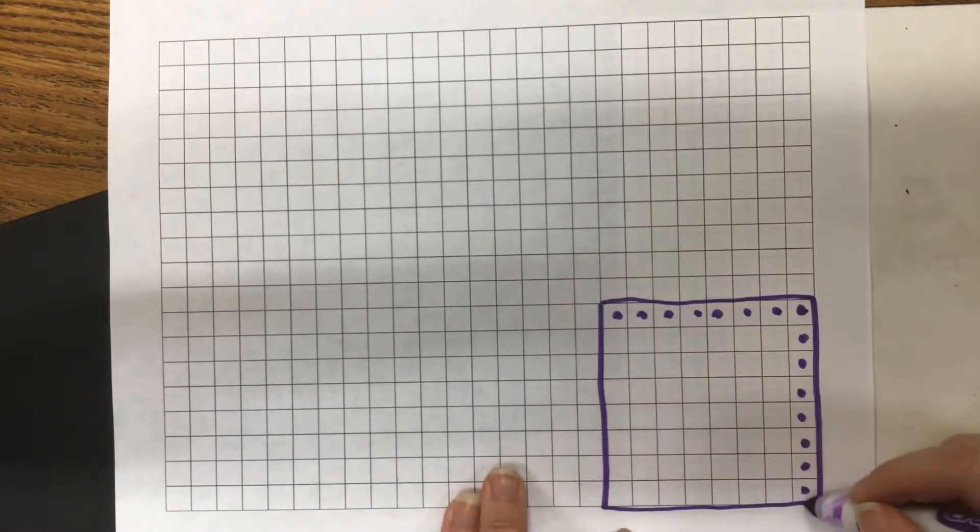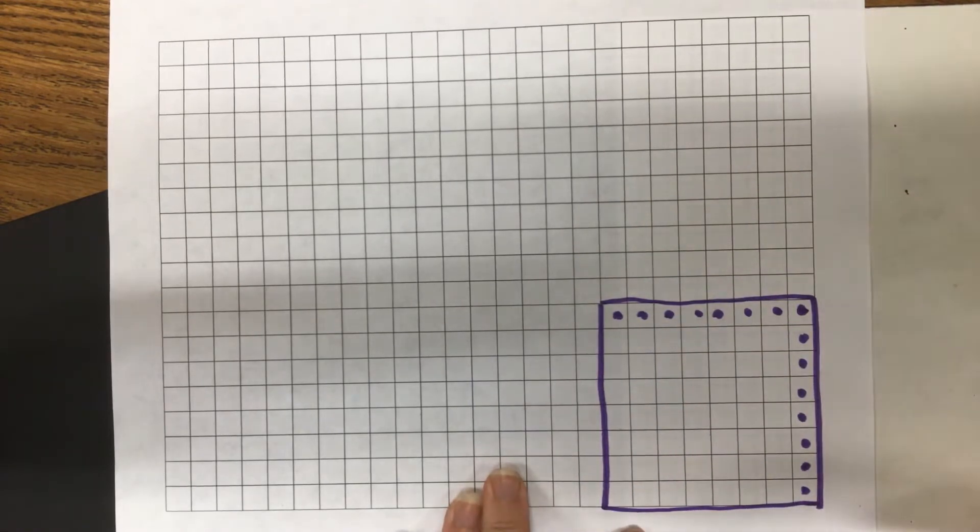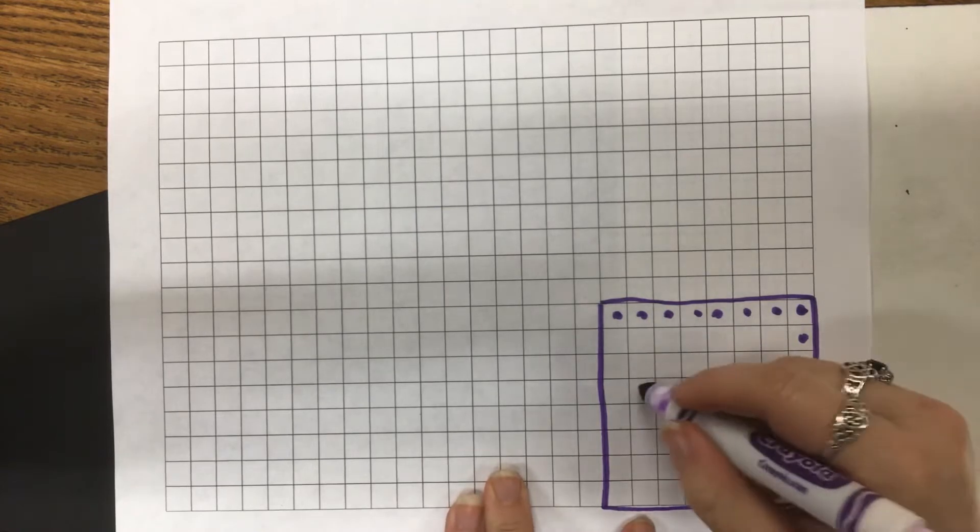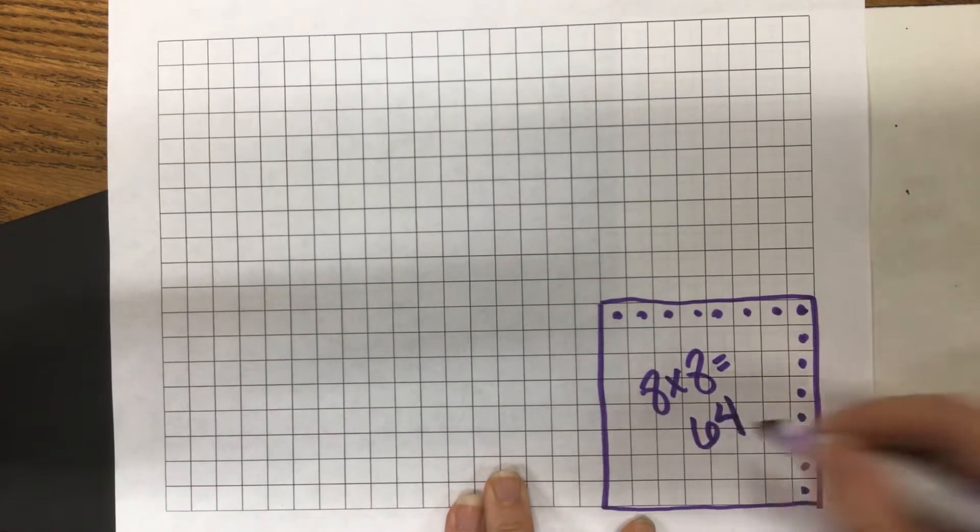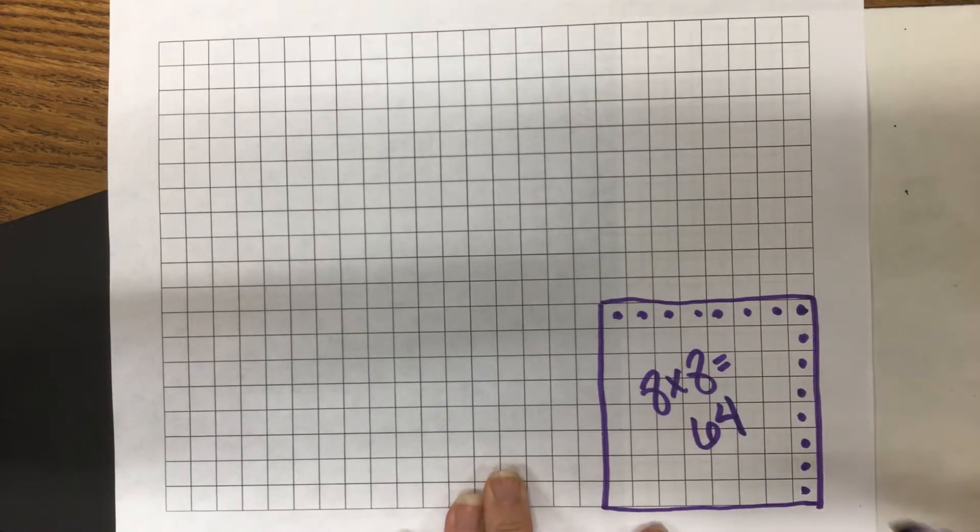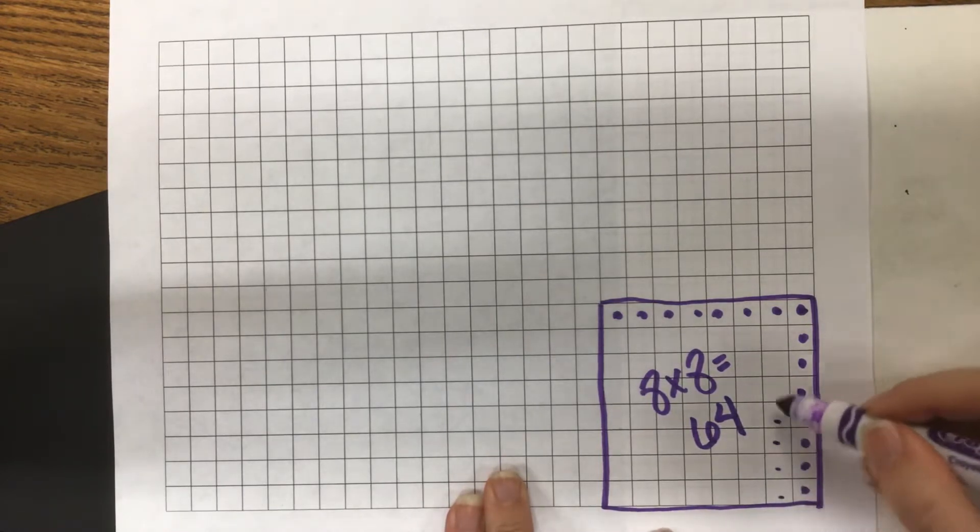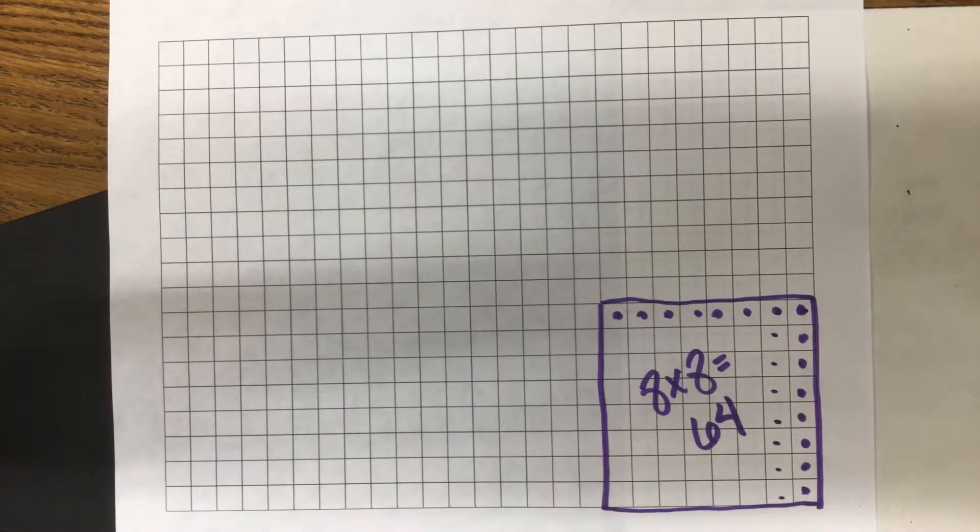So eight times eight is sixty-four. If you don't know the fact, you're welcome to put dots in every square and count every square if you need to.